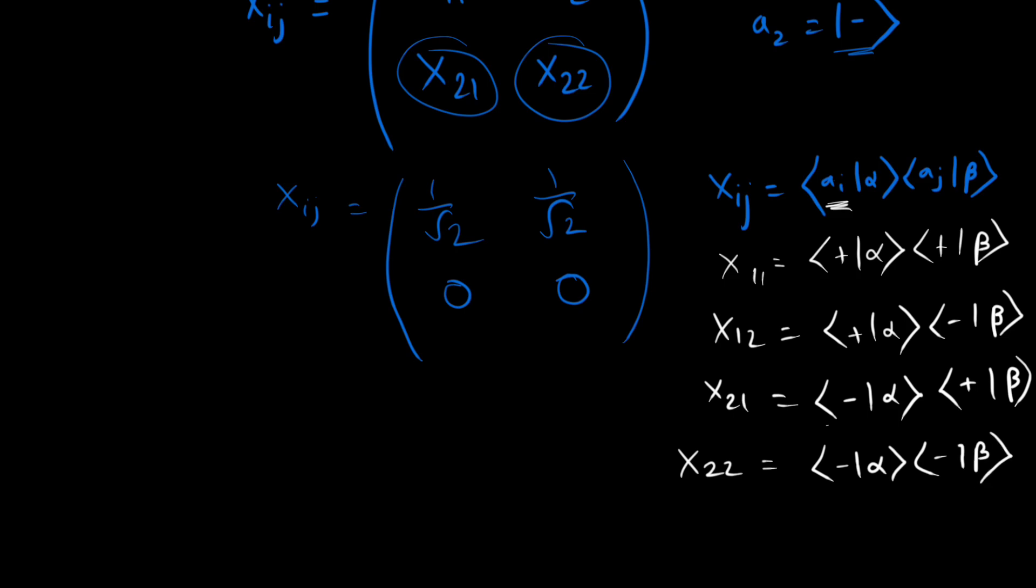So as you can see, since these two terms are 0, these two terms would become 0. And since these two terms are 1 and these two terms are 1 by root 2 each, so we get 1 by root 2. So this would be our final representation of the matrix.